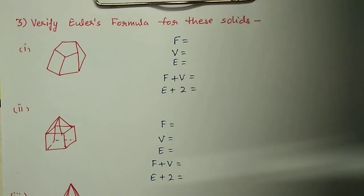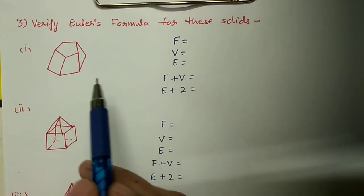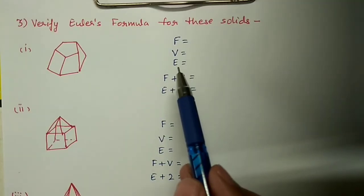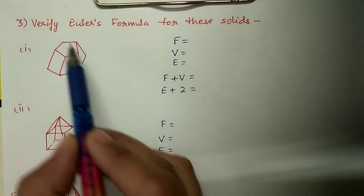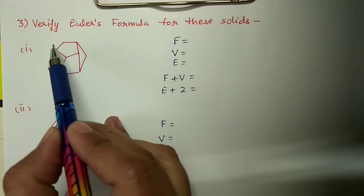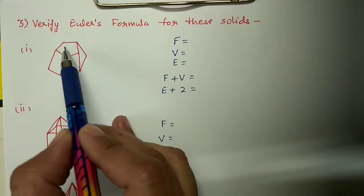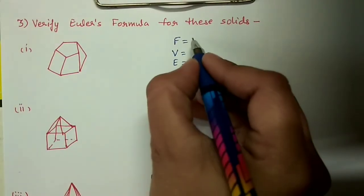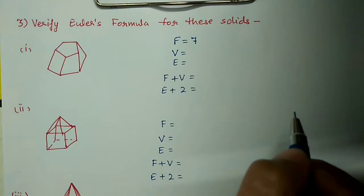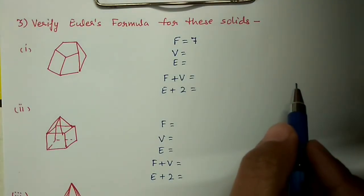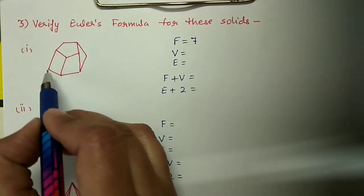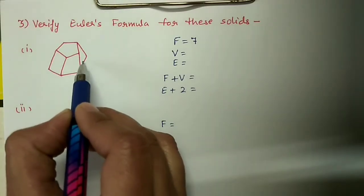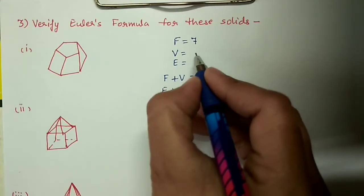Question number 3: Verify Euler's formula for these solids. First solid: we will find faces, vertices and edges. Faces - counting the plain faces: one, two, three, four, five, one top and one base - total seven faces. Vertices means the corners: one, two, three, four, five corners here and same five corners for the base, so total ten vertices.